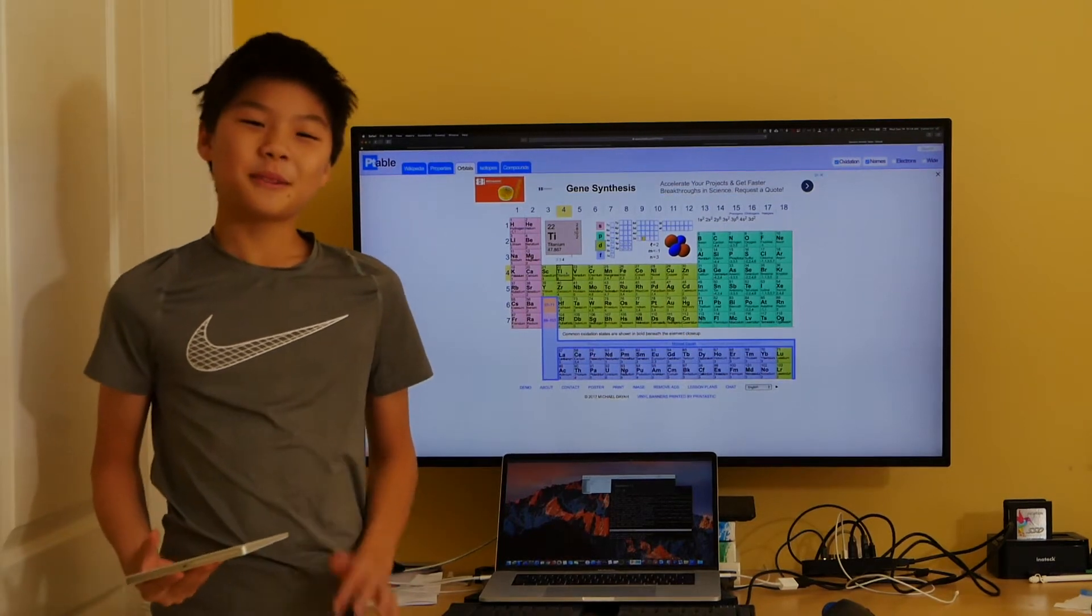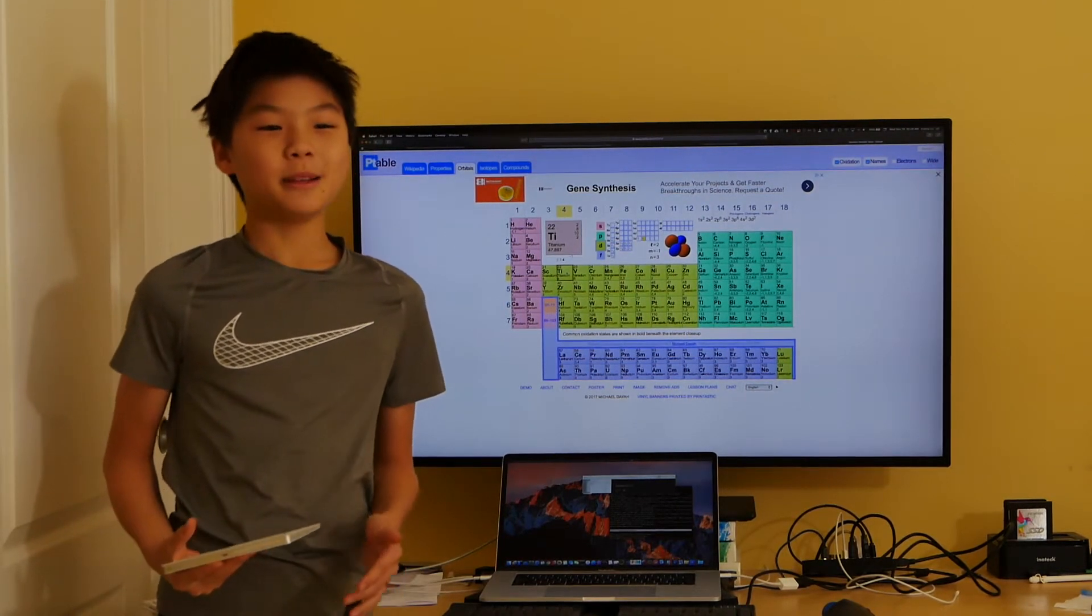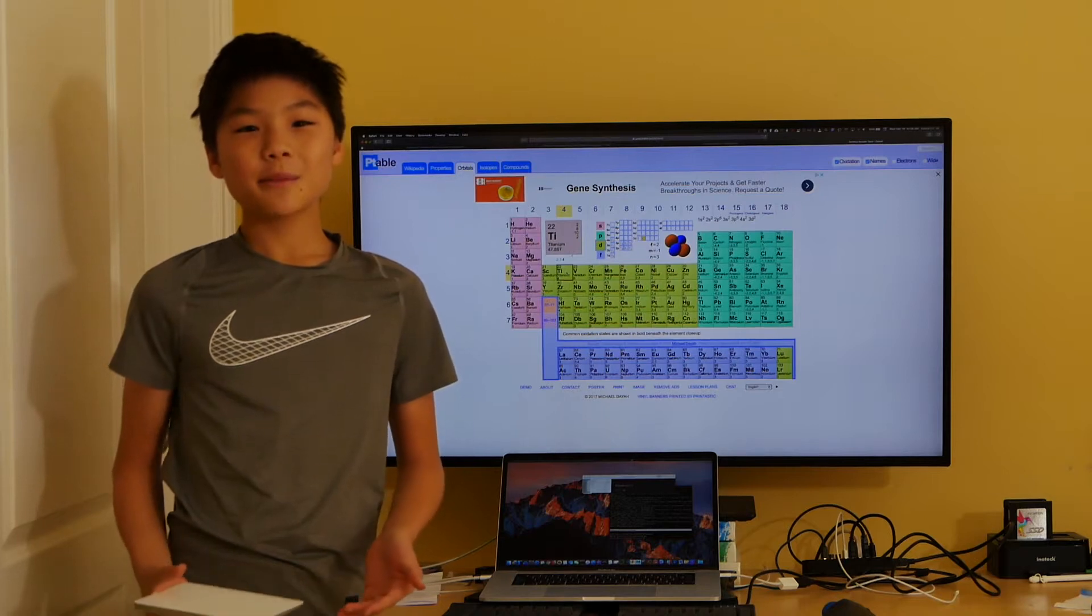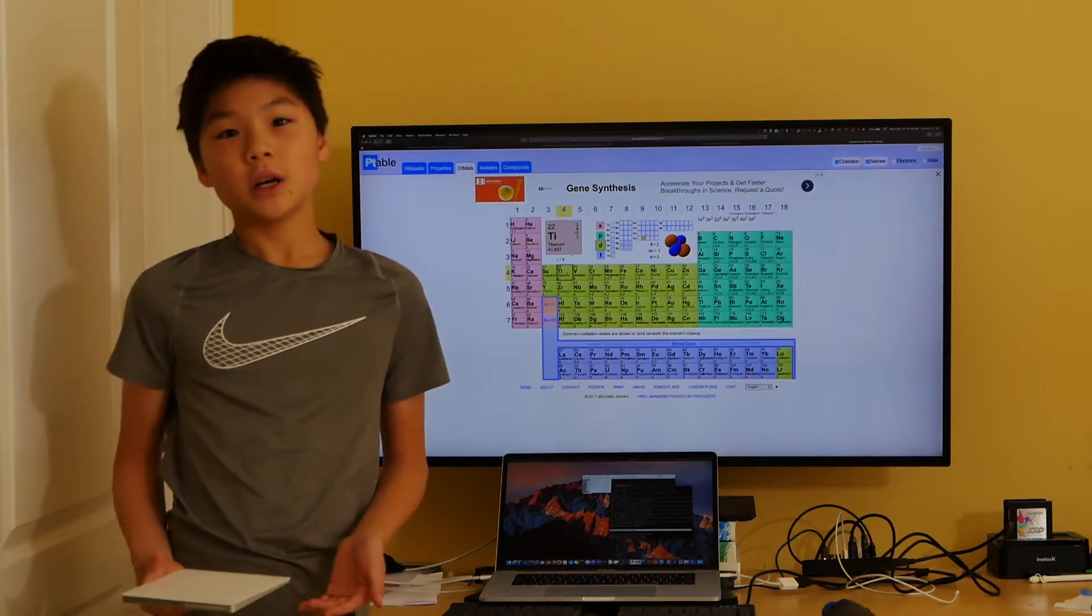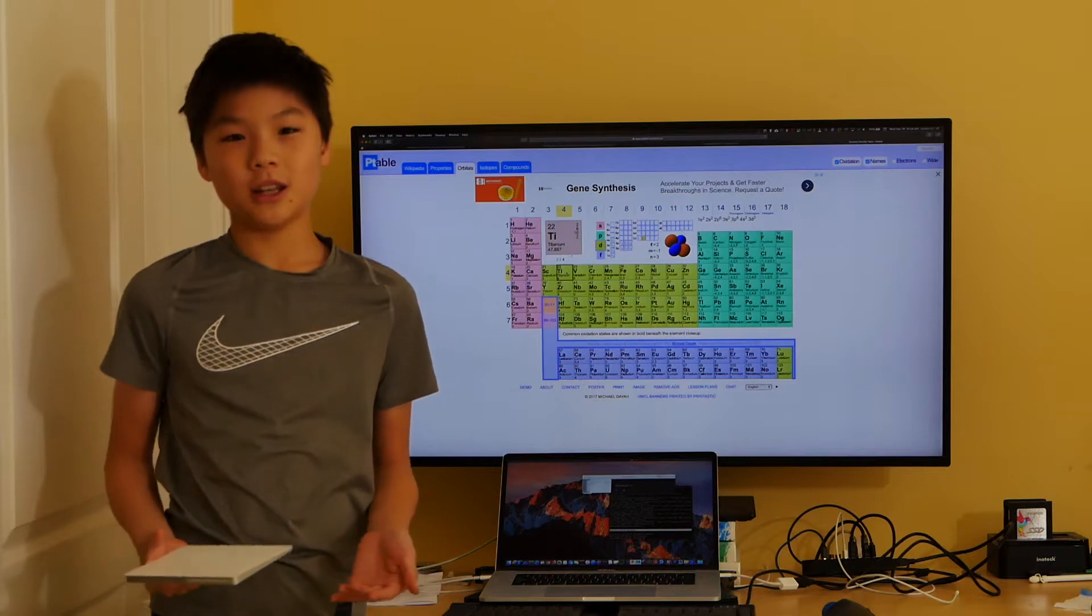When I started building my 3D model of titanium, I visited ptable.com. Titanium has an atomic number of 22, which means that there are 22 protons and 22 electrons.